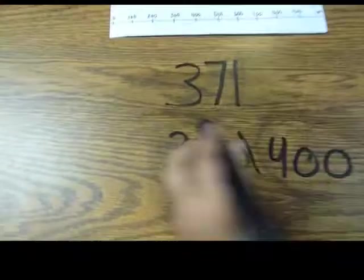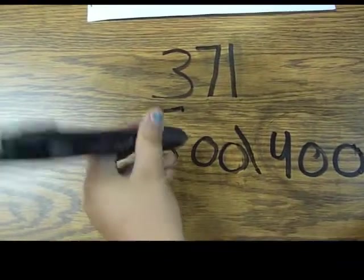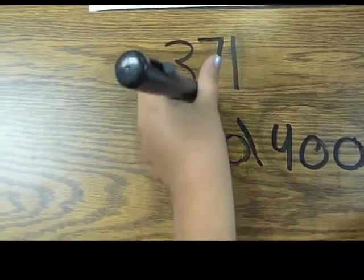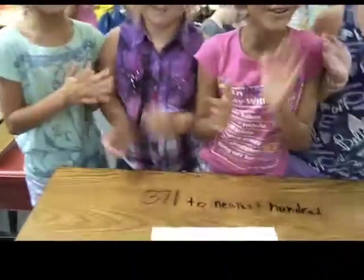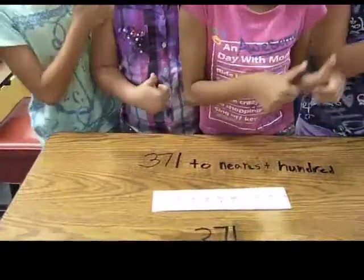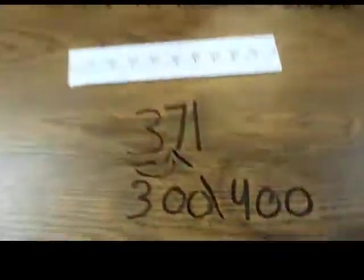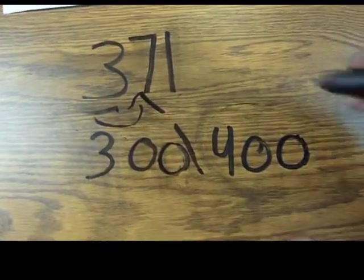Underline the 100, and go to your neighbor, the 10. If your neighbor next door is 5 or more, round up! Round up! So, 7 is more than 5, so you round up.